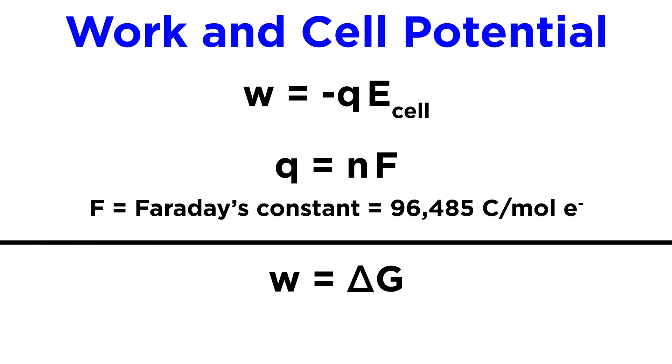This can also be expressed in terms of the change in free energy, and if we want to know about the standard free energy change, we simply change the cell potential to the standard cell potential with the appropriate superscript. This means that the maximum cell potential is directly related to the free energy difference between reactants and products in the cell.